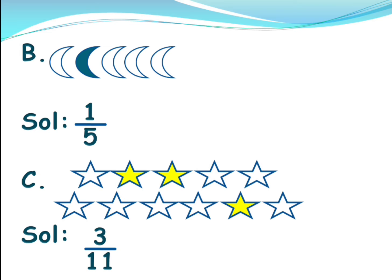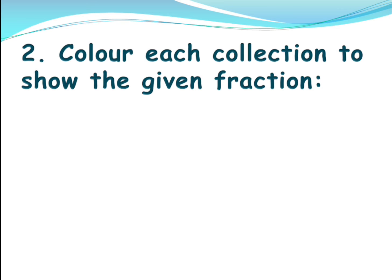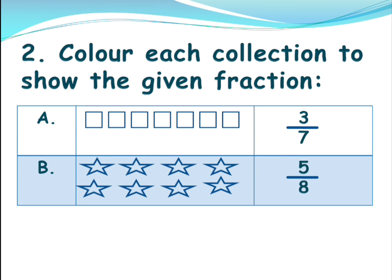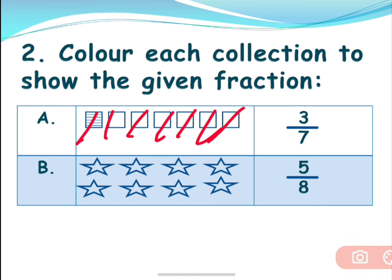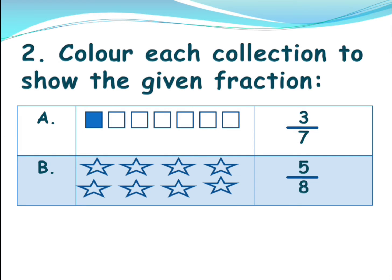Now let's see the next question: color each collection to show the given fraction. The fraction is given and we need to color it. In the first one, there are squares and the fraction is three by seven. Seven is the denominator — the total. Let's check: one, two, three, four, five, six, seven — yes, seven squares. We need to color three: one, two, three. So the fraction for these squares is three by seven.